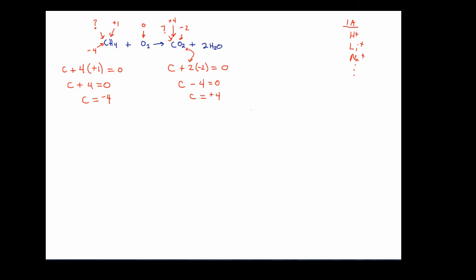At this point, we can already recognize that carbon has undergone an oxidation number change — going from minus four in the reactant CH4 to plus four in the product CO2. So we know right now that this is, in fact, an oxidation-reduction reaction. We also notice that oxygen is starting out at zero as a pure element and has gone to minus two in CO2, which also confirms a change in oxidation state. This equation is definitely redox.